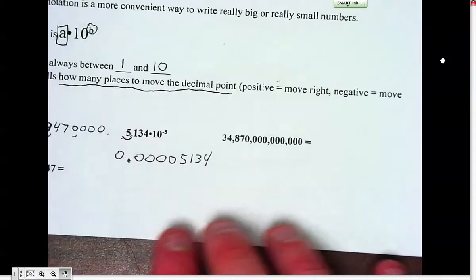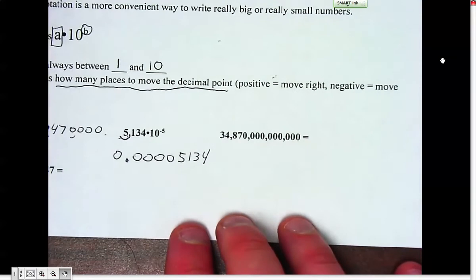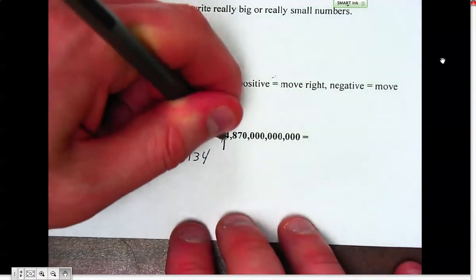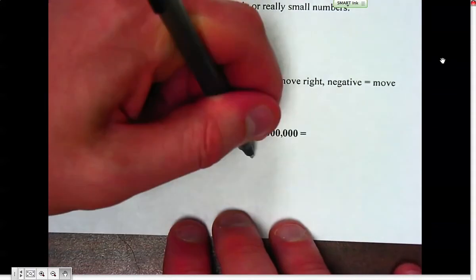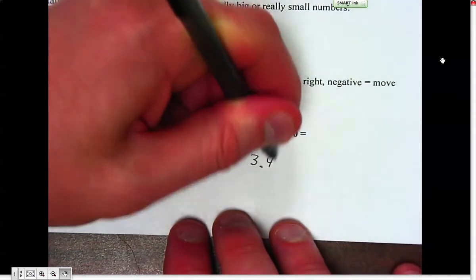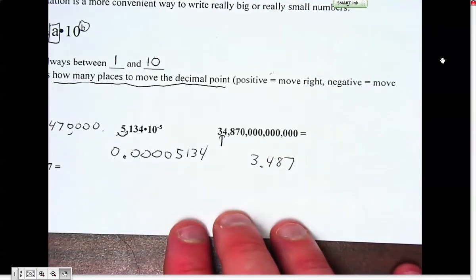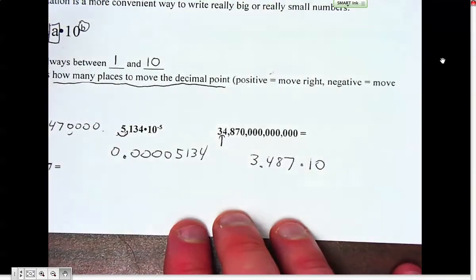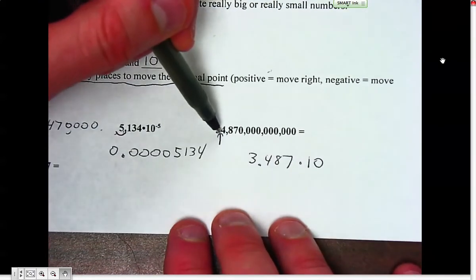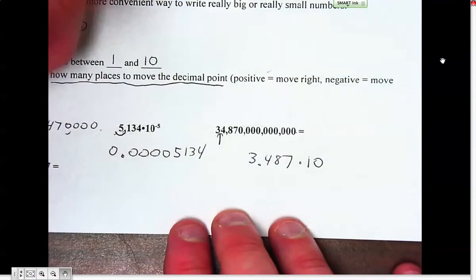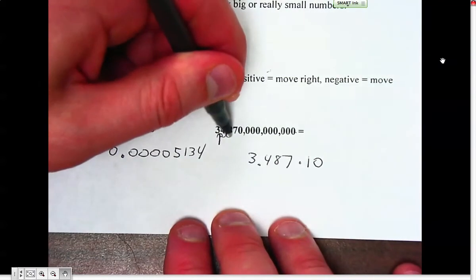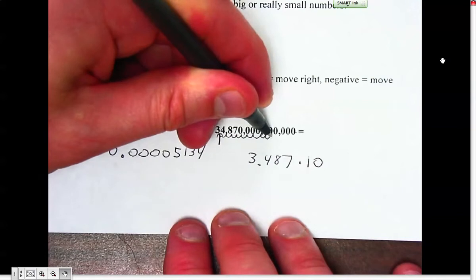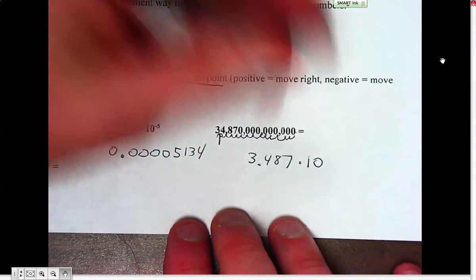We can go the other way as well. Remember, we always want our number to be between 1 and 10, so we typically put the decimal point right between the first and second digits. So I'm going to have 3.487. I don't need to write all those zeros now. Then I multiply by 10 to a power. Now I just need to know how many places to move the decimal from here to get over to there: 1, 2, 3, 4, 5, 6, 7, 8, 9, 10, 11, 12, 13.